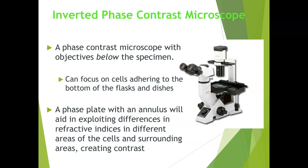Tissue culture facilities will almost always have the inverted phase contrast microscope in the facility. This is because this scope is able to visualize living cells adhered to the bottom of flasks and dishes. There is no need to kill or stain the cells, and the objective lenses are located below the stage in order to be able to focus on the bottom of tissue culture flasks and plates. The light will also pass through a phase plate which will improve the contrast of the specimen so that living cells can be seen. The next image will explain the way the phase plate works.